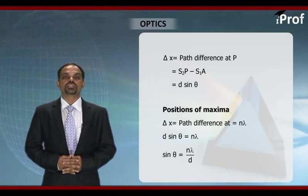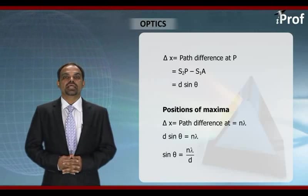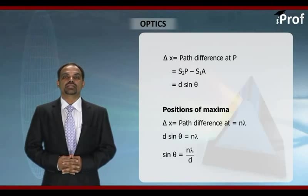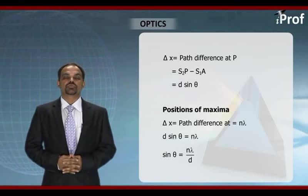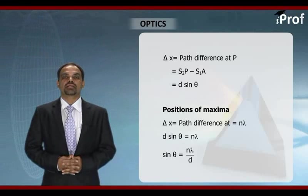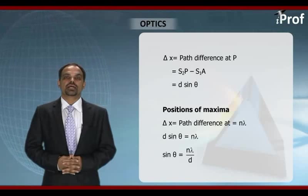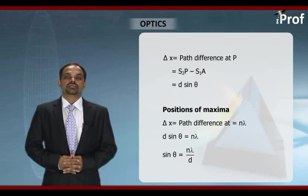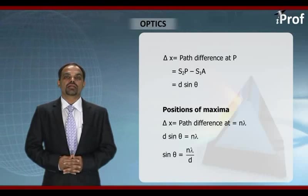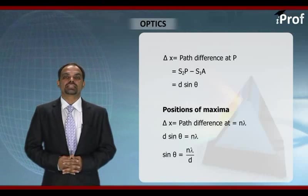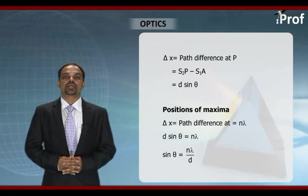Further, let us assume that the angular position of the point under consideration is theta. We consider a reference line as the line bisecting S1 and S2 as the reference line. We are measuring the angle theta with respect to this line. And we say the angular position of the point P is theta. If we just drop perpendicular from S1 on the line joining S2 and P, let the foot of perpendicular be M.